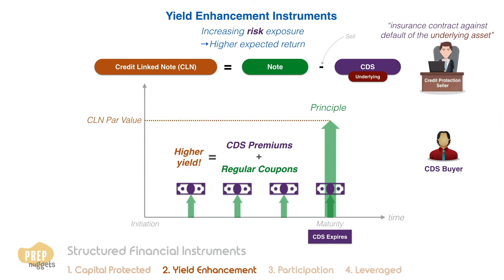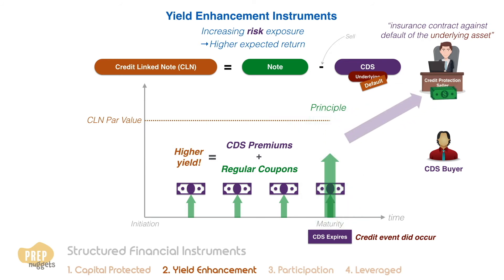However, if by expiration the underlying asset did default, the credit event has occurred. The issuer, being the credit protection seller, will draw from the principal that is supposed to be returned to the CLN holders to pay to the CDS buyer. In such a case, the CLN holder may not receive the full par value back at maturity, and the attempt to increase the yield has failed.